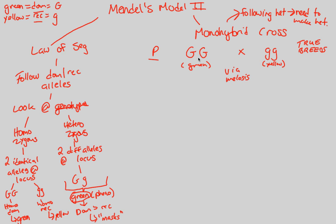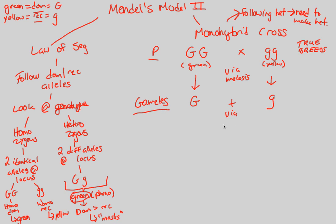Via meiosis, we figure out what gamete each parent gives its offspring. If the dad has capital G, capital G, his gamete — which is haploid — will exclusively be capital G. If mom has lowercase g, lowercase g, her gamete will be lowercase g. These are both diploid parents that must be cut in half via meiosis. Via fertilization, a sperm cell with capital G and an egg cell with lowercase g combine to give us the genotype capital G, lowercase g.